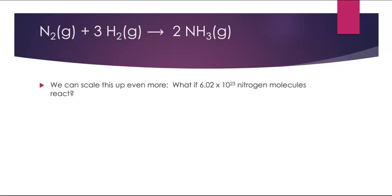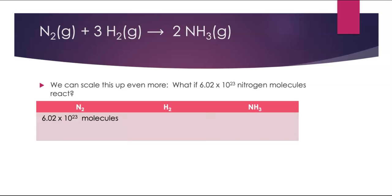What if 6.02 times 10 to the 23rd nitrogen molecules reacted? Based on our ratios, if I have 6.02 times 10 to the 23rd nitrogen molecules, I would need three times that number of molecules for hydrogen, or 1.81 times 10 to the 24th hydrogen molecules. And for ammonia, I would need 2 times 6.02 times 10 to the 23rd molecules of ammonia to form.